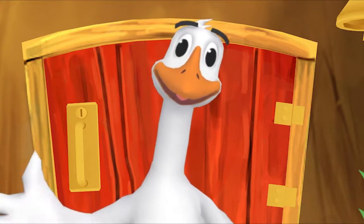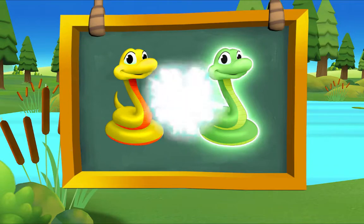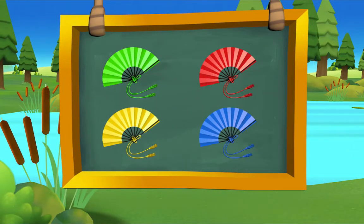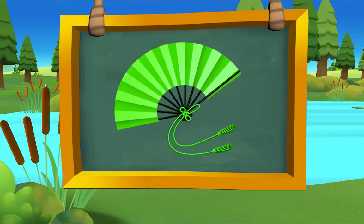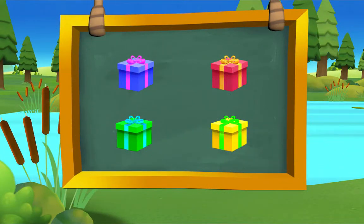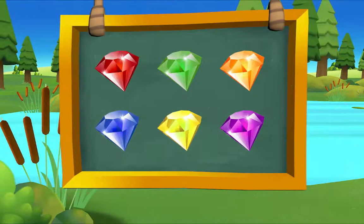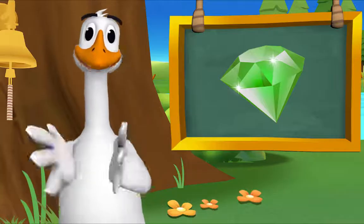Here's something we already did — let's do it again! Which snake is green? There it is — green snake. Which fan is green? There it is — green fan. Which gift is green? There it is — green gift. Which jewel is green? There it is — green jewel. That's exactly right!